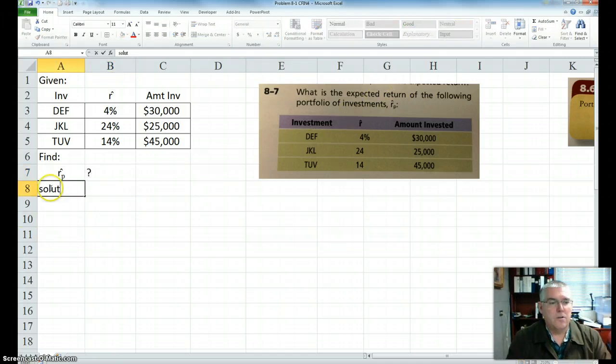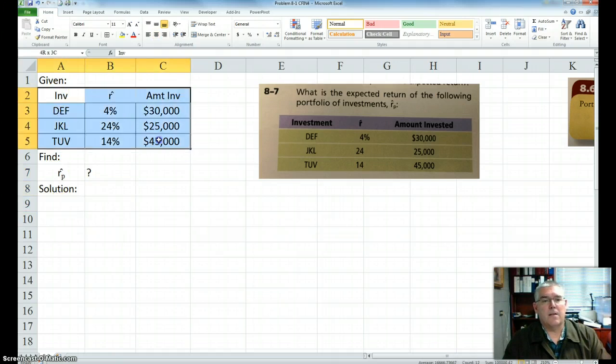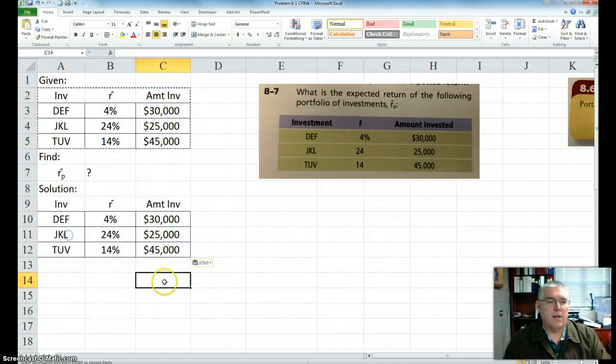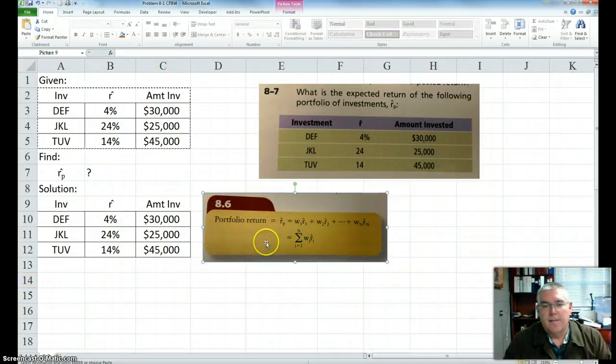So for a solution, probably what I'll do is, we'll just copy this down, since it's easy to copy it. Put it down in the solution area, because I'm going to modify the table a little bit. We want to find, if you look at the equation, equation 8.6 in your book, it's the sum of the weights of each investment times the expected return of each investment.